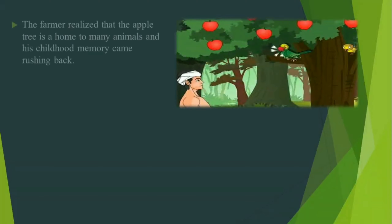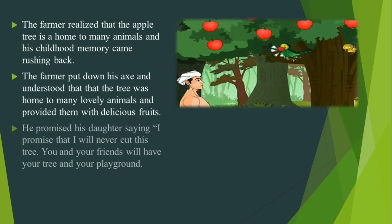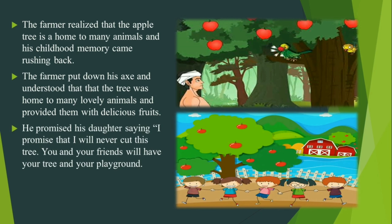The farmer realized that the apple tree is a home to many animals and his childhood memories came rushing back. The farmer put down his axe and understood that the tree was home to many lovely animals and provided them with delicious food. He promised his daughter, saying, I promise that I will never cut this tree. You and your friends will have your tree as your playground.